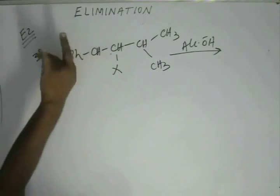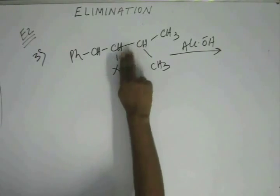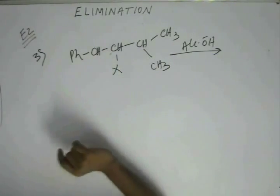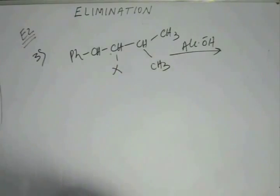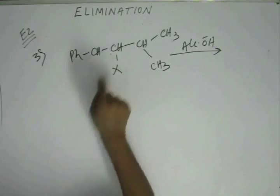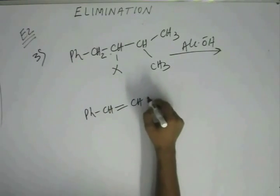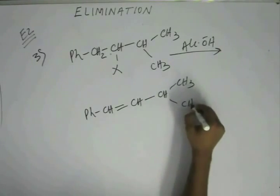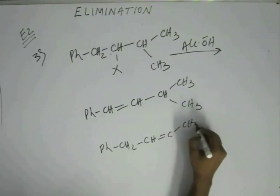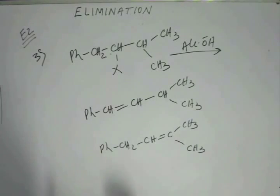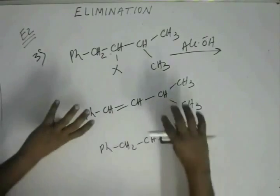If you abstract hydrogen from one beta position, the pi bond comes at that position, giving two methyl groups on one side and one group on the other. If you abstract from the other beta position, the pi bond forms there, giving a phenyl group on one side and one group on the other — two groups total. Drawing both products: one is more substituted with three groups and one hydrogen around the double bond, the other is less substituted with two groups and two hydrogens.